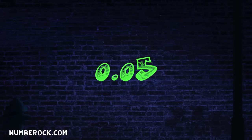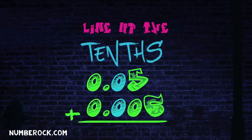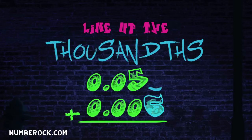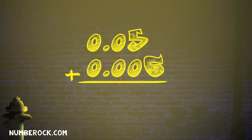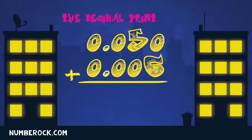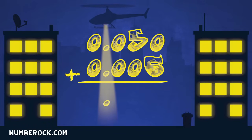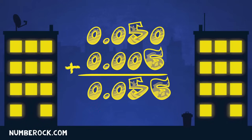To add five hundredths and six thousandths, line up the place values with confidence. When right of a number there's an empty space, writing zeros can help by holding the place. The decimal point drops directly below, so that the points line up in a row. Added up, fifty-six thousandths is the sum — it feels so good to know that this problem is done.